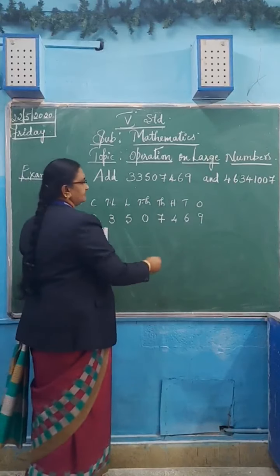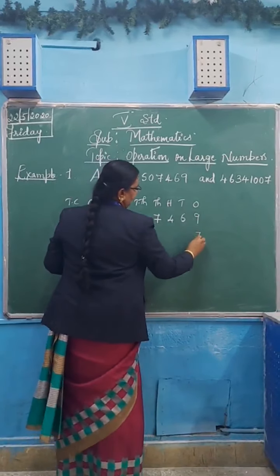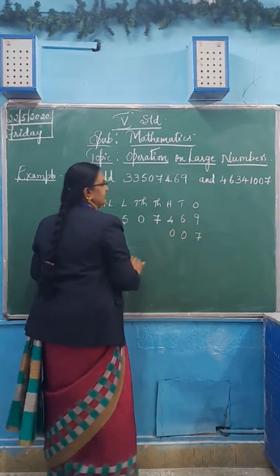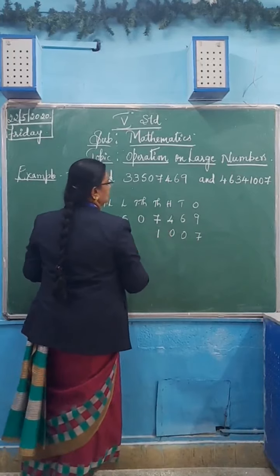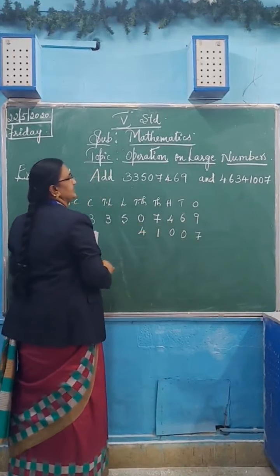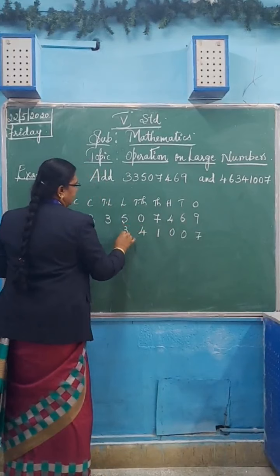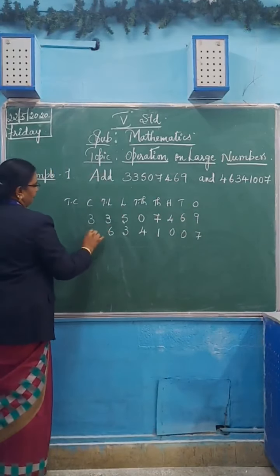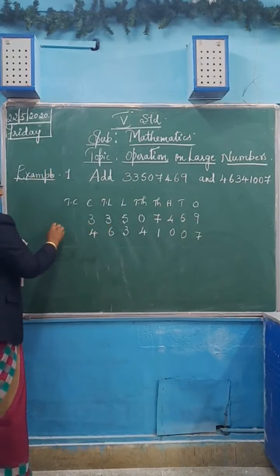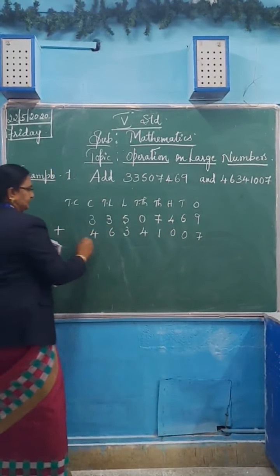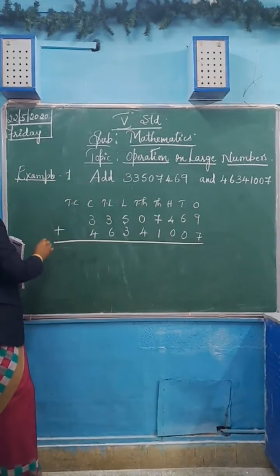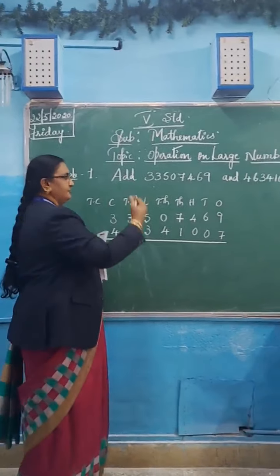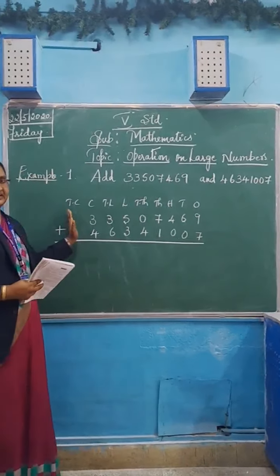Now I will put plus here. The next number: seven in ones place, zero in tens place, zero in hundreds place, one in thousands place, four in ten thousands place, three in lakhs place, six in ten lakhs place and four in crores place. Now I will put plus here and I will start doing the addition. How to do the addition? Start from the right hand side — always start the addition from the right hand side.